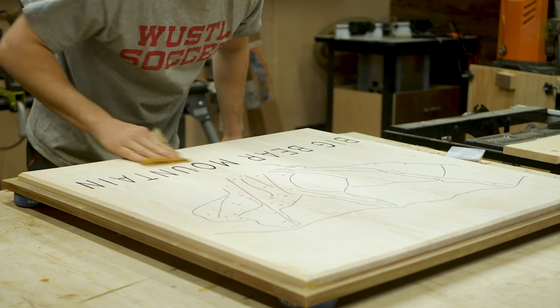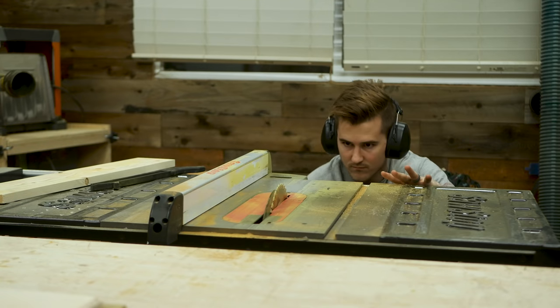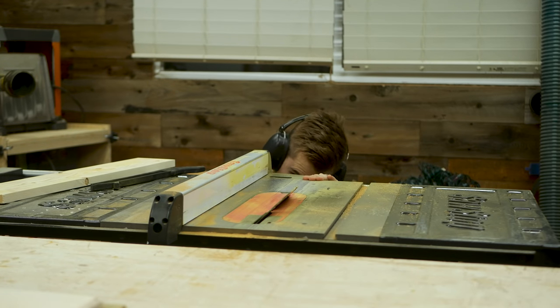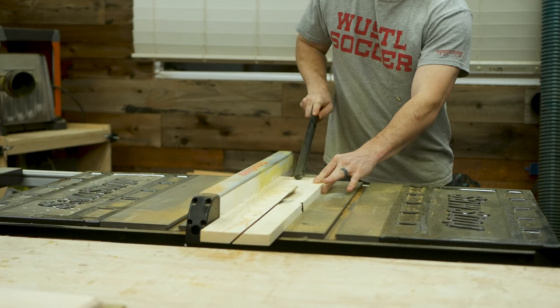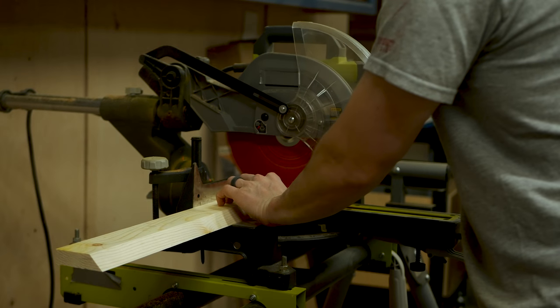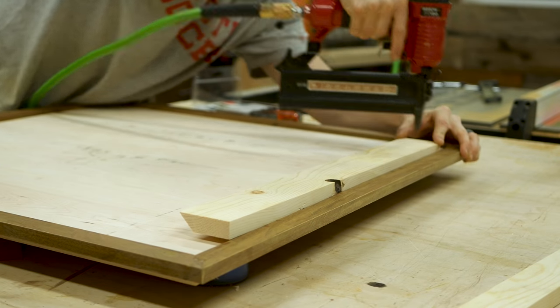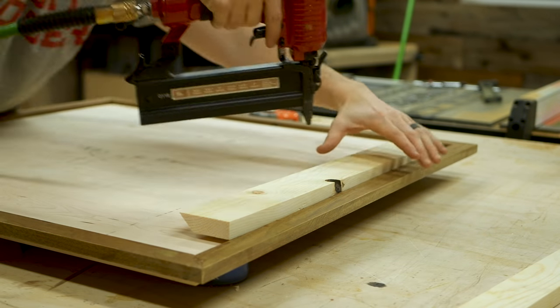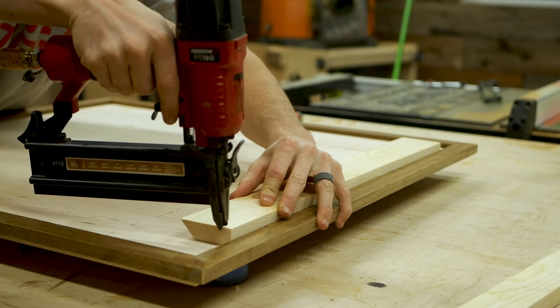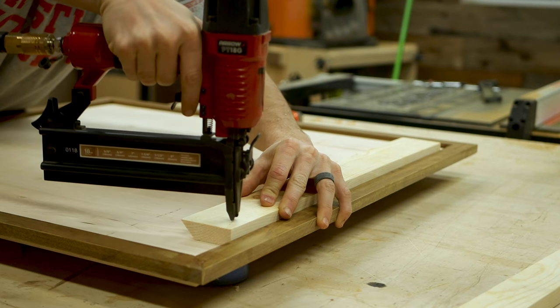I planned to use a french cleat system all along to hang this so I headed back to the table saw and angled the blade at 45 degrees and passed a scrap 1x6 through the saw. By doing this you create both sets of cleats that you'll need to hang the piece, one to go on the actual map and one to attach to the wall. I used glue and brad nails to hold things in place. Once the glue dries this will be rock solid.